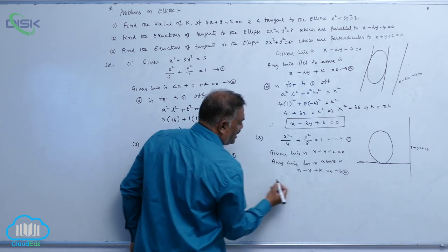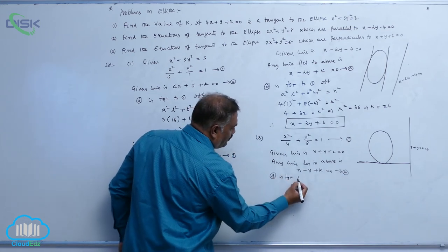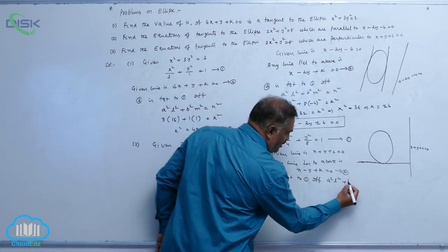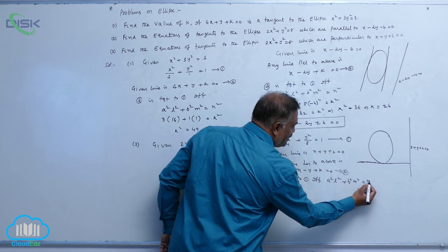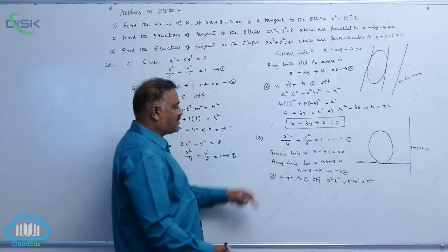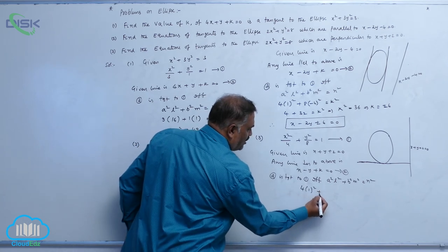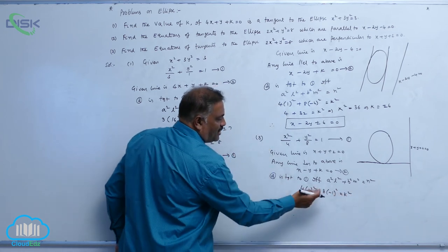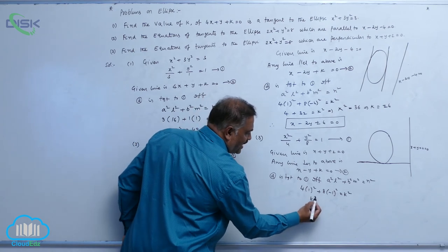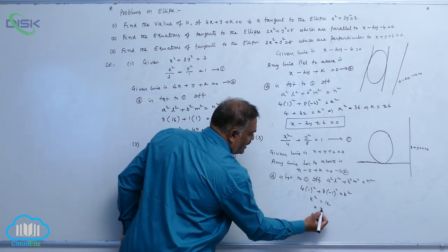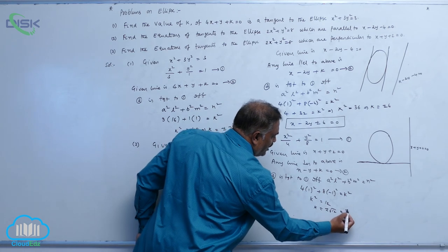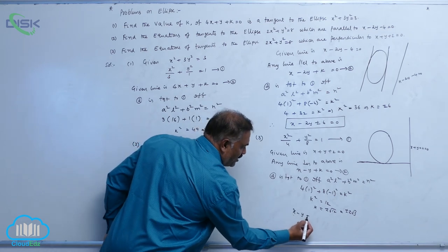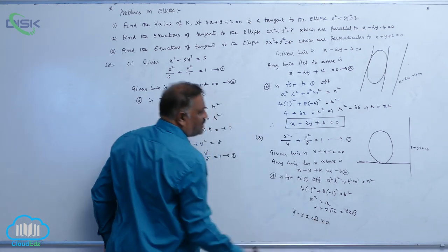Call this equation 2. Equation 2 is tangent to equation 1 if and only if we apply the condition a squared l squared plus b squared m squared equal to n squared. Here a squared is 4 times 1 squared plus b squared 8 times minus 1 whole squared equals k squared, giving 4 plus 8 equals 12. So k squared equals 12, meaning k equals plus or minus 2 root 3. Therefore the tangent line is x minus y plus or minus 2 root 3 equal to 0.